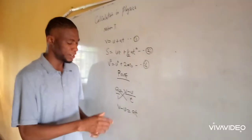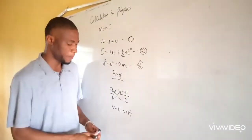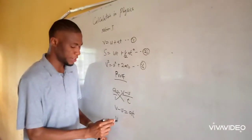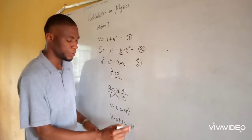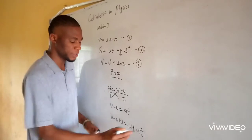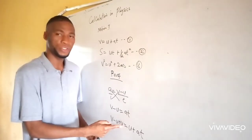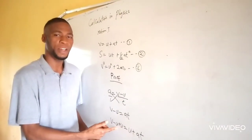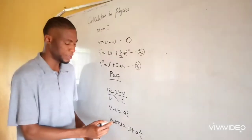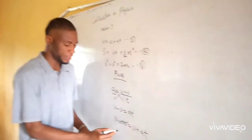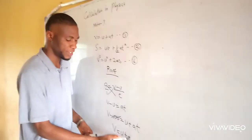We want to make v the subject of the formula, so this u jumps the equal sign. We now have v minus u plus u equals u plus at. The minus u and plus u cancel each other to zero, so we now have v equals u plus at. This is the first equation of motion.